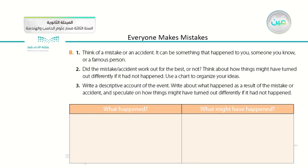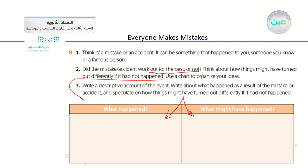When you write your own essay or story, you have a chart divided into two parts: what happened and what could have happened. Think of a mistake or an accident — it can be something that happened to you, someone you know, or a famous person. Did it work out for the best or not? Think about how things might have turned out differently if it hadn't happened. Write here what happened, then write what might have happened differently if that thing didn't take place. Use the chart to organize your ideas.